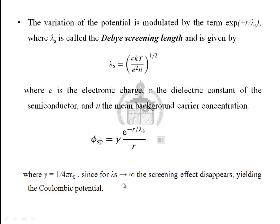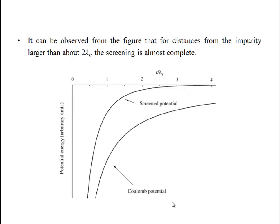If lambda_s tends to infinity, then the screening effect disappears, yielding the normal Coulomb potential. The Coulomb potential decreases gradually, whereas the screened potential drops to zero at a particular distance due to the screening effect.